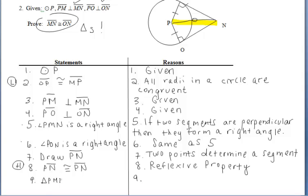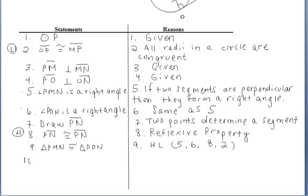That's enough to say the triangles are congruent. Note: while using HL, you do not have to say that the right angles are congruent in your proof — you just have to say that you have them. If you were using SAS and the angle was included between the two congruent sides, you would have to mention that the angles are congruent; but with HL, you do not. At this point, we can take it to the next step and say that segments MN and NO are congruent by CPCTC.